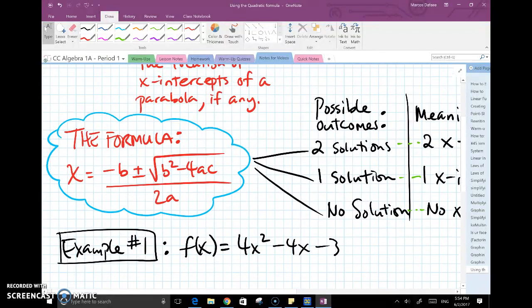The formula itself is as follows: x equals negative b plus or minus radical b squared minus 4 times a and c, and it's all over 2a.